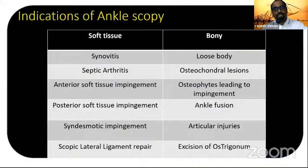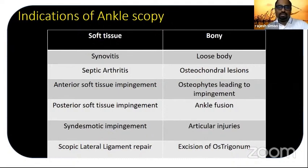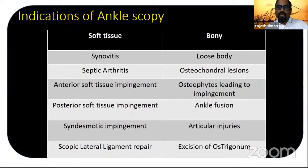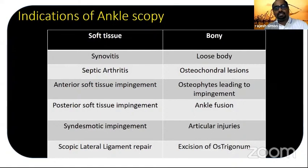We have a few indications for ankle arthroscopy. Broadly, there are soft tissue and bony causes. Soft tissue causes include synovitis, septic arthritis, soft tissue impingements, syndesmotic impingement — that is anterolateral impingement — and Brostrom repair with the scope. Bony causes include osteochondral lesions, arthritis leading to ankle fusions, pylon fractures, and the os trigonum when doing a posterior scope.